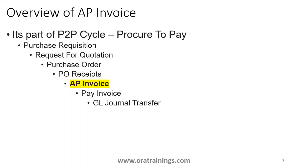So what is the AP invoice, and in which part of the process is it involved? The AP invoice is part of the P2P cycle — the procure-to-pay cycle. It starts with the requisition, then quotation, purchase order, then PO receipt, then you create an AP invoice based on the purchase order. The supplier and item details from the PO will be available in the AP invoice, and based on that invoice information you pay the invoice amount to the supplier, then transfer to general ledger.